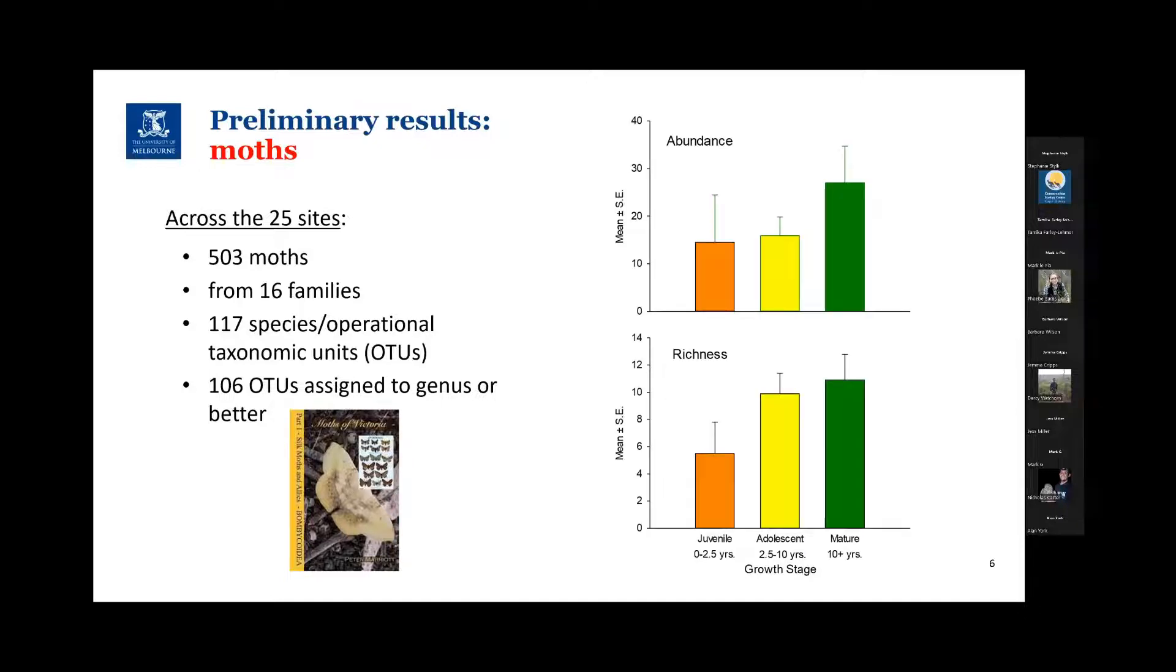So just in an overview, across the bottom are the three primary growth stages, time since fire vegetation recovery categories. The top graph is the average abundance across the sites, and you can see that the older sites have the highest number of moths.